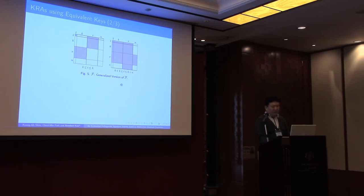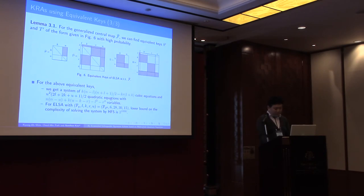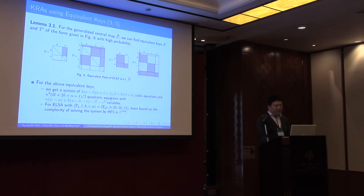Let F-hat be a generalized version of F-bar with this coefficient matrix. Then we can find this equivalent key with high probability. But finding this equivalent key is still complicated. So we use the concept of good key to find it more efficiently.